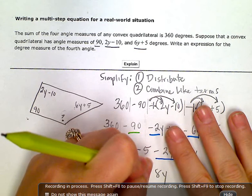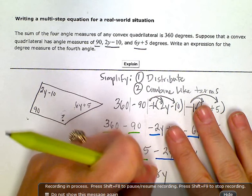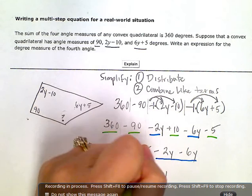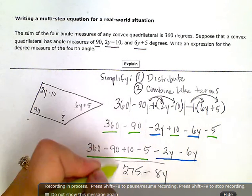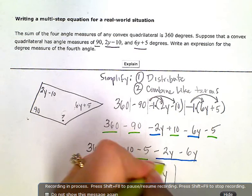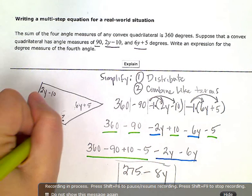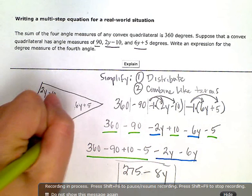So my final expression here is 275 minus 8y. I'm going to make this a little smaller. That minus is kind of giant. So the expression to represent this fourth angle right here is 275 minus 8y.